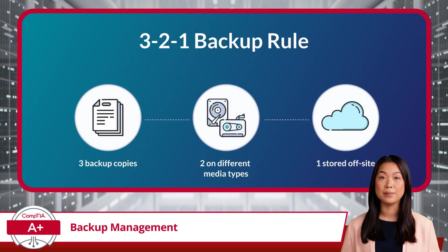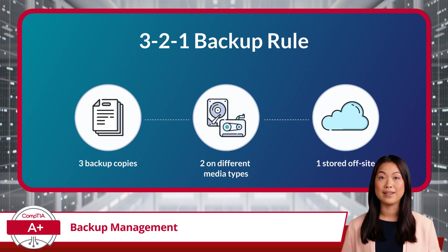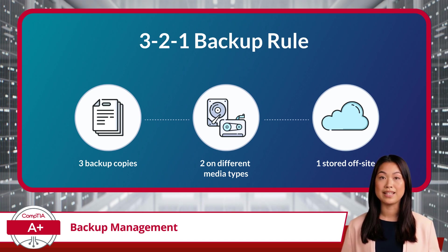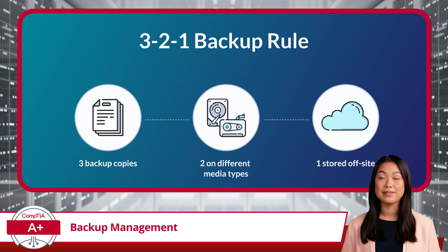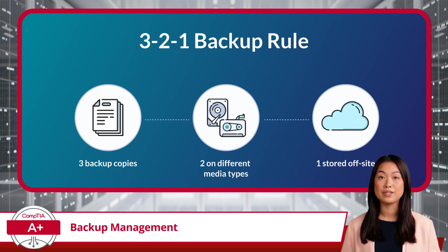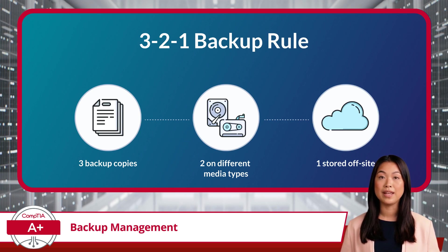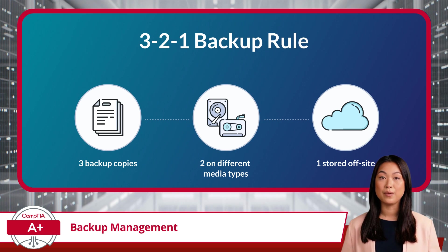To wrap things up, I will talk briefly about the 3-2-1 backup rule, which provides a simple yet highly effective guideline for structuring your overall backup strategy. This rule ensures your data remains secure by emphasizing redundancy, diversity, and geographic separation. According to the 3-2-1 rule, you should always have three copies of your data — the original and two backups. At least two of these copies should be stored on different types of media, such as an external hard drive and cloud storage, to reduce the risk of simultaneous failure. Additionally, one of these backups should be stored off-site, ensuring your data is safe from local disasters like fires, floods, or theft.